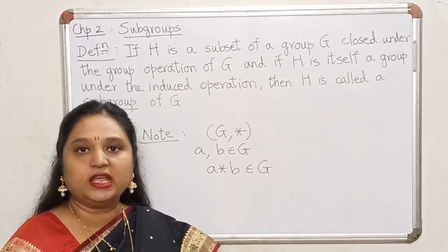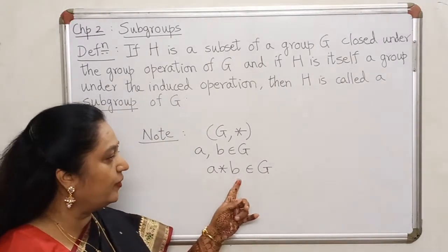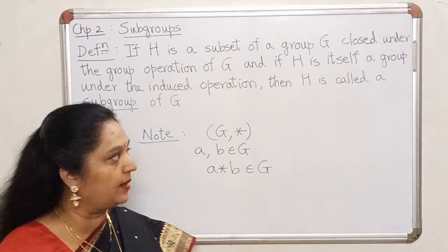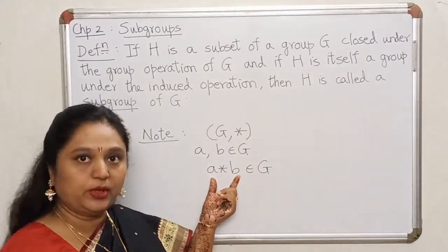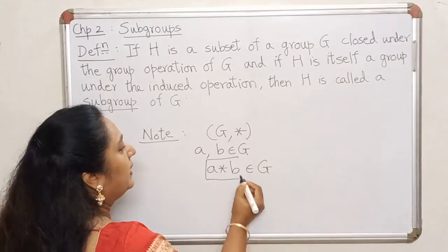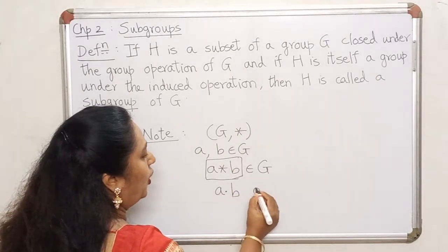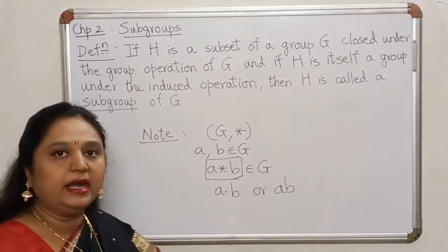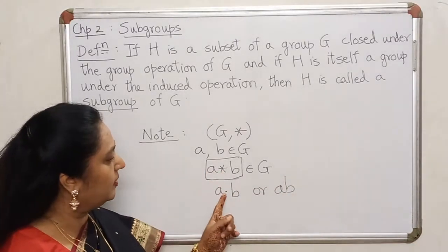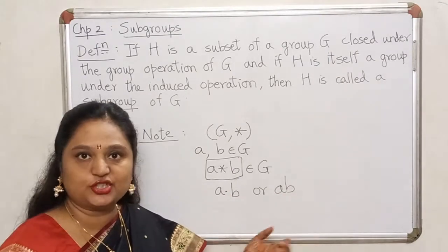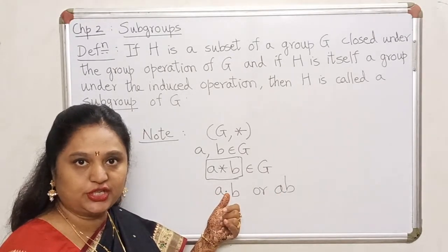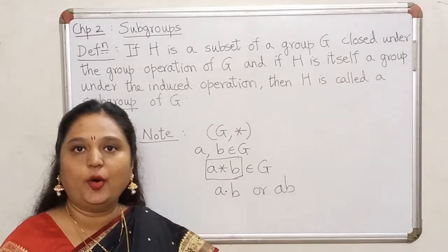Just for ease of notation, instead of calling this a star b — when talking about a general group — to simplify things, instead of writing it as a star b, we agree to write this element either as a dot b or simply ab. It becomes a little tedious to keep writing star throughout. So instead of star, we will write dot or simply do juxtaposition of a and b. It is understood that this dot does not really stand for multiplication in general; it stands for whatever is the operation on the group.